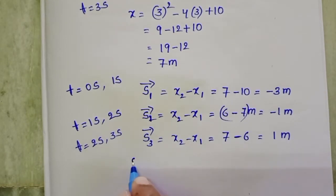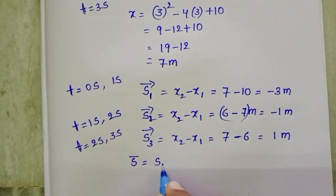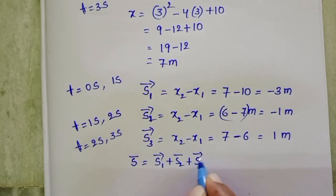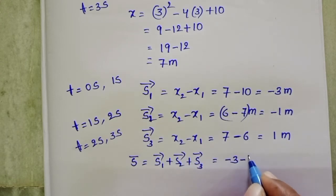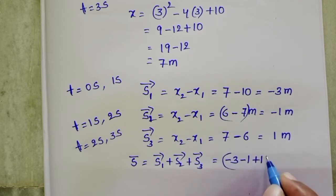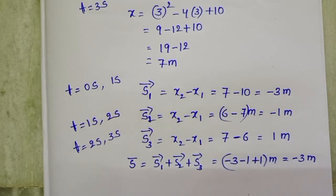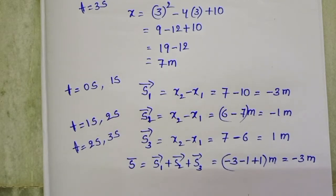Total displacement S = S1 + S2 + S3 = minus 3 minus 1 plus 1 = minus 3 meters. This is the displacement of the particle.